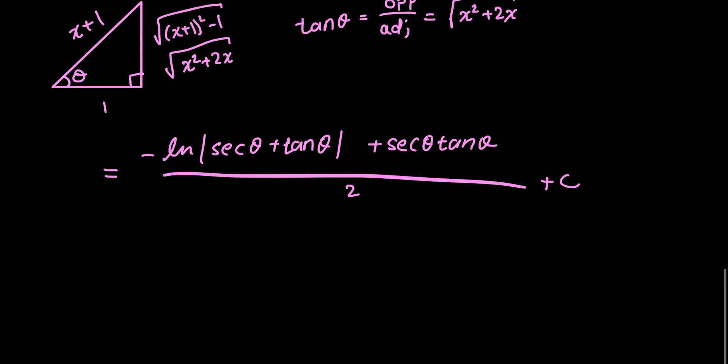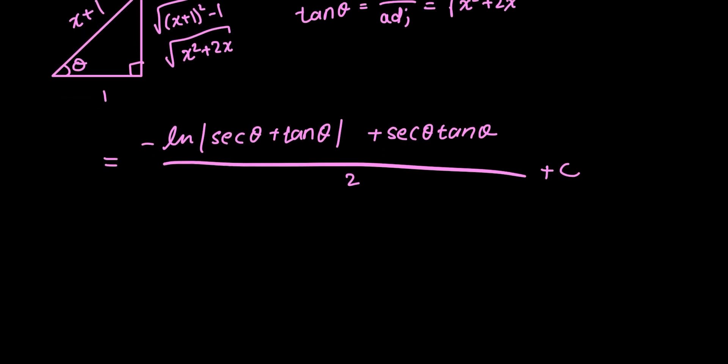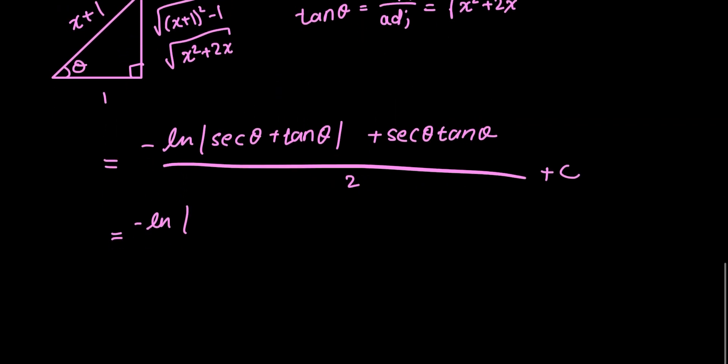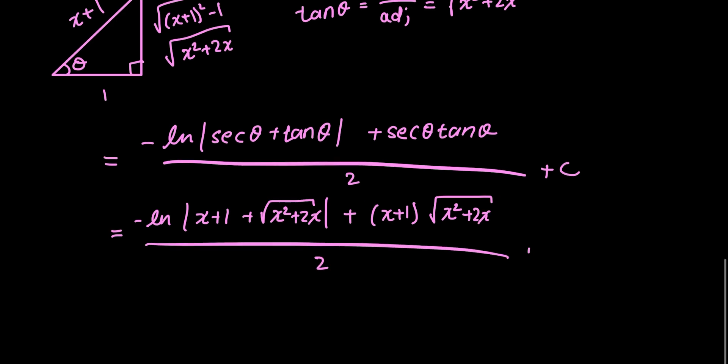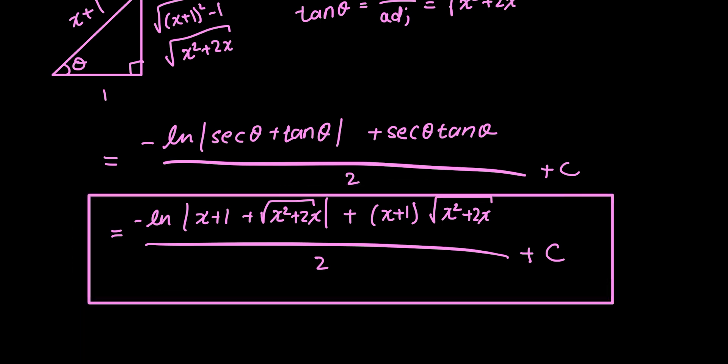And now, just plugging everything that I just defined back in, I get that this is equal to the negative natural log of secant is just x plus 1, and tan is the square root of x squared plus 2x plus x plus 1 times the square root of x squared plus 2x all over 2 plus the arbitrary constant C. And that's it.